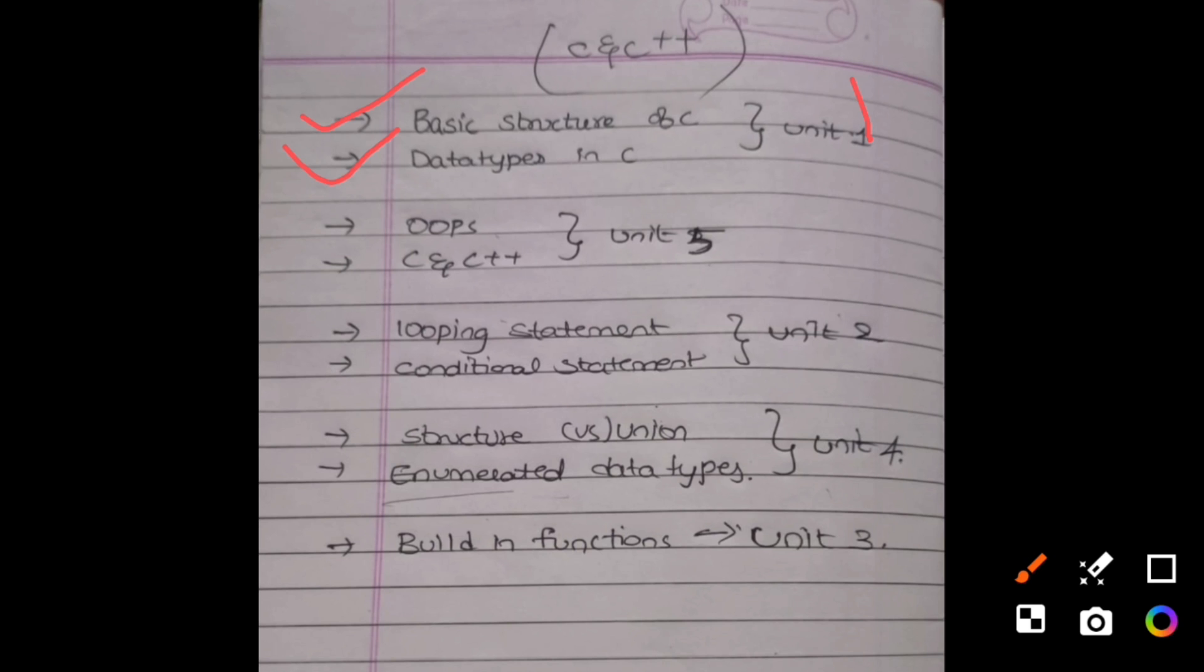Here also I have given only two questions: OOPs concept and C and C++ differences. OOPs is object-oriented programming. From second unit also you have only looping statements and conditional statements. Looping statement means for loop, do loop, while loop. Conditional statement is if, else if, if else.